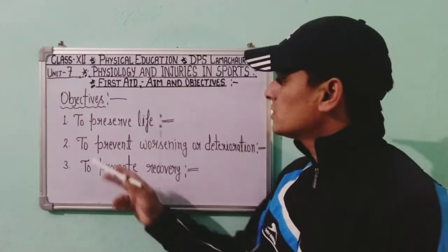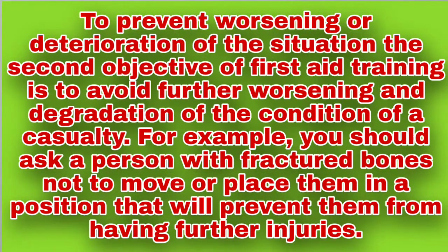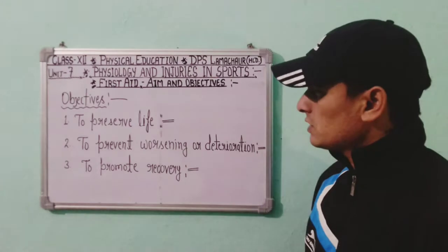The second objective is to prevent worsening or deterioration of the situation. The second objective of first aid training is to avoid further worsening or degradation of the condition of a casualty. For example, you should ask a person with fractured bones not to move, or place them in a position that will prevent further injury.